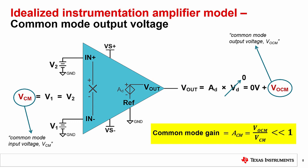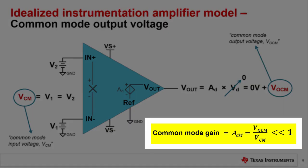But, in actuality, there will be some small voltage at the output. This is called the common mode output voltage, or VOCM. VOCM is usually much less than the applied input voltage, so the ratio of the common mode output voltage to the common mode input voltage is much less than one. This ratio is called the common mode gain, or attenuation of the instrumentation amplifier, or ACM.